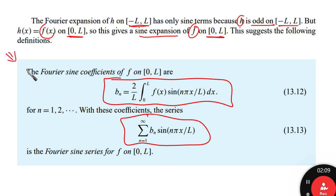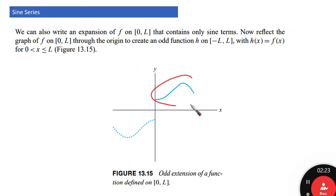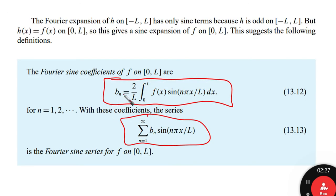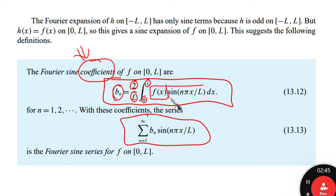The important part is the Fourier sine coefficients of the function f on the interval from 0 to L. The coefficients in this case we give as b_n. b subscript n equals 2 over L times the integral from 0 to L of the function itself multiplied by sine(n pi x over L) dx. These are the coefficients that we are going to use.